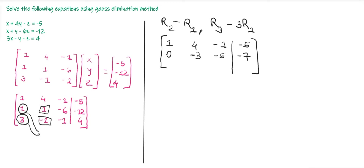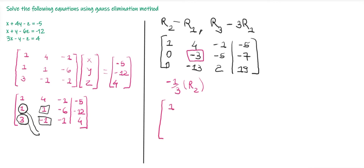−12 − (−5) = −7. After performing R3 − 3R1, the third row becomes [0, −13, 2 | 19]. Now we make the leading entry of the second row equal to 1 by dividing the whole row by −3. On dividing, we get [0, 1, 5/3 | 7/3]. The third row remains the same.